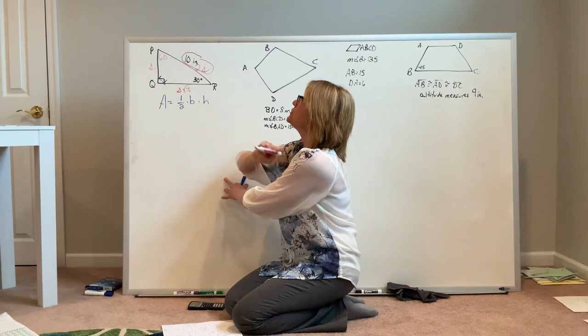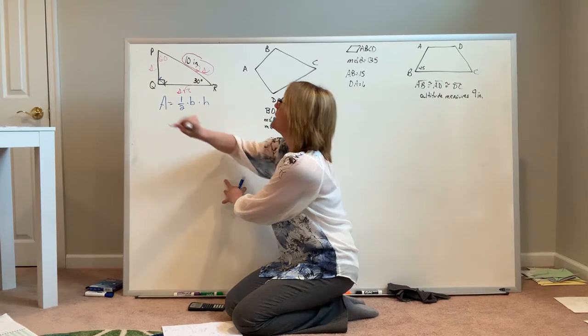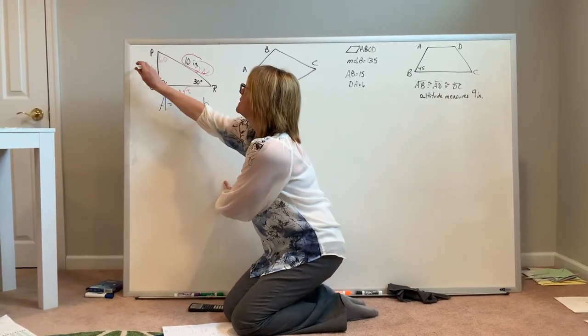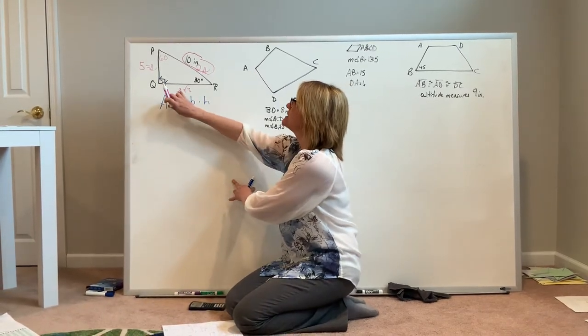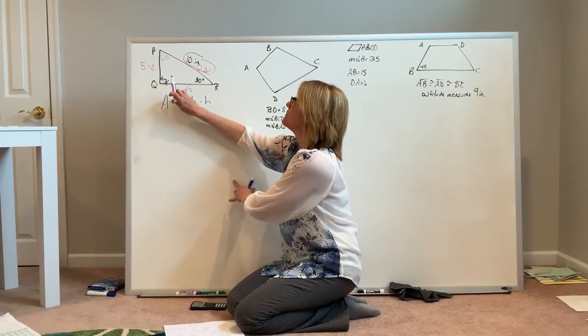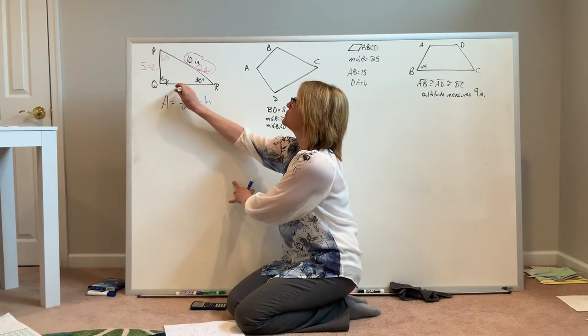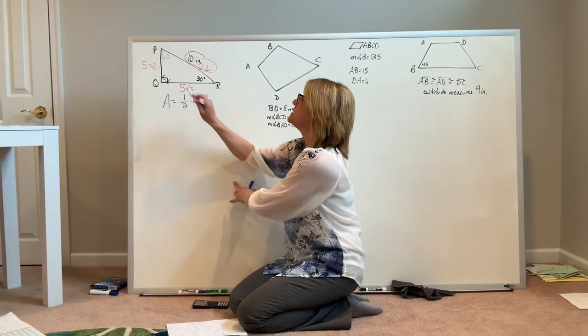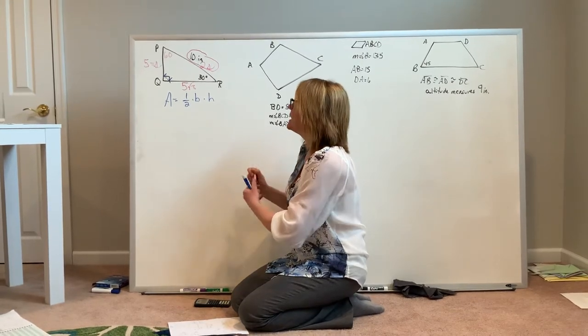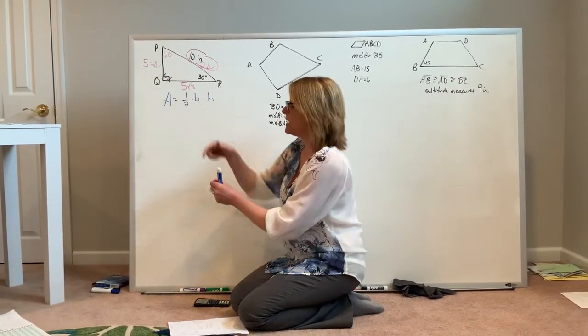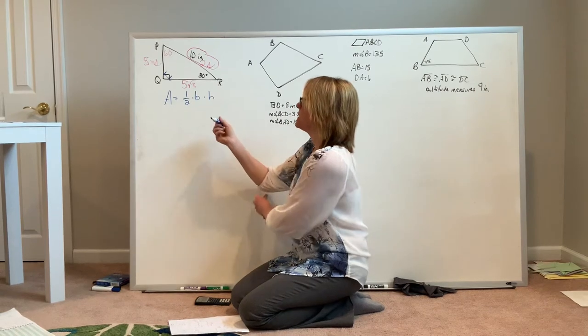To start with, I know that 2s is equal to 10. If 2s equals 10, the length of side PQ would be equal to 5 inches. Since I now know what s is, I can replace it with 5 to find that this side has a length of 5 square root of 3. Now that I know my base and my height, it's just a matter of doing my calculations.